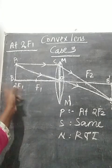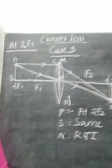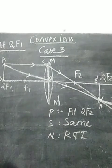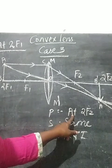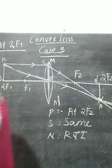2F1 is on the left side, but the image formed is on the right side at the same distance from the lens, that is 2F2. Same size, real and inverted.